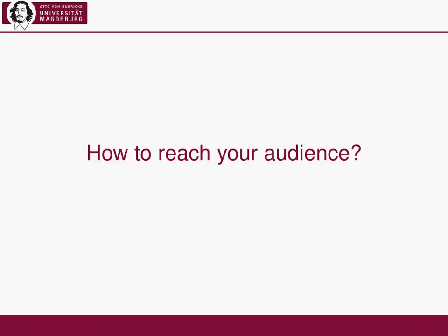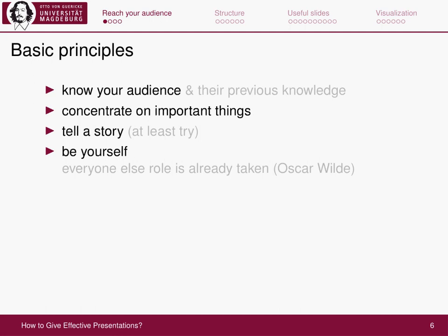First part: how to reach your audience. There are some basic principles. The most important one is you should know your audience — this is easier said than done. You should know what kind of people you are giving your talk to, because you should know their previous knowledge. This is very important for selecting the information you want to talk about and the structure of your presentation. The second thing is you should concentrate on important things, because you usually have a limited amount of time. Don't tell them stuff they already know or that is unimportant.